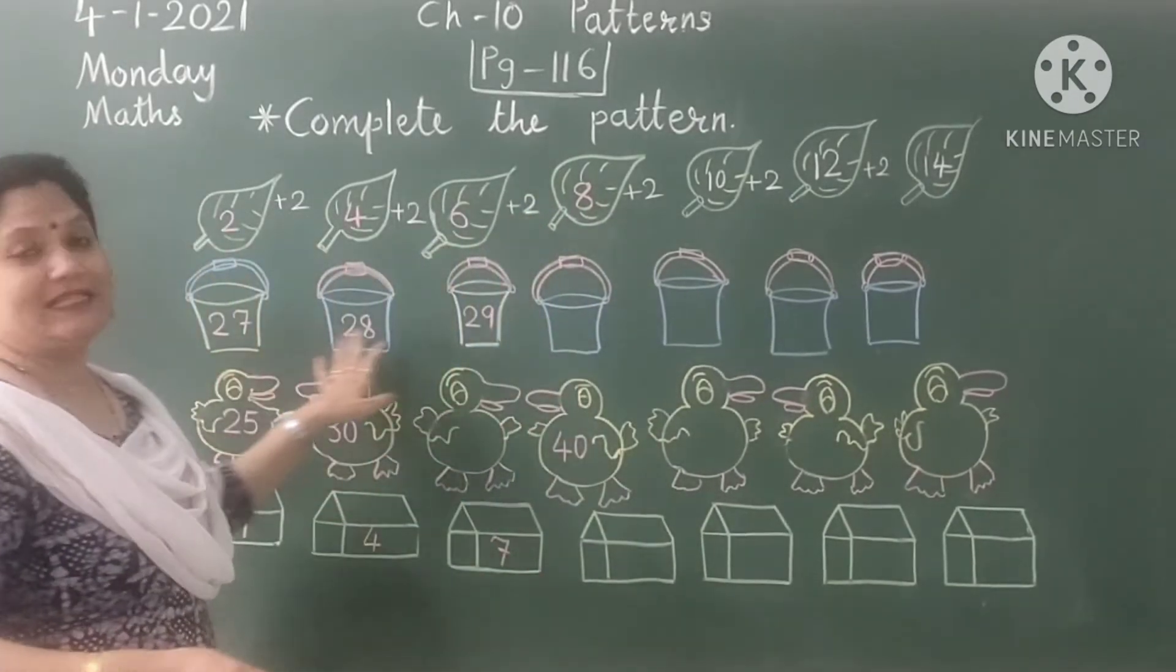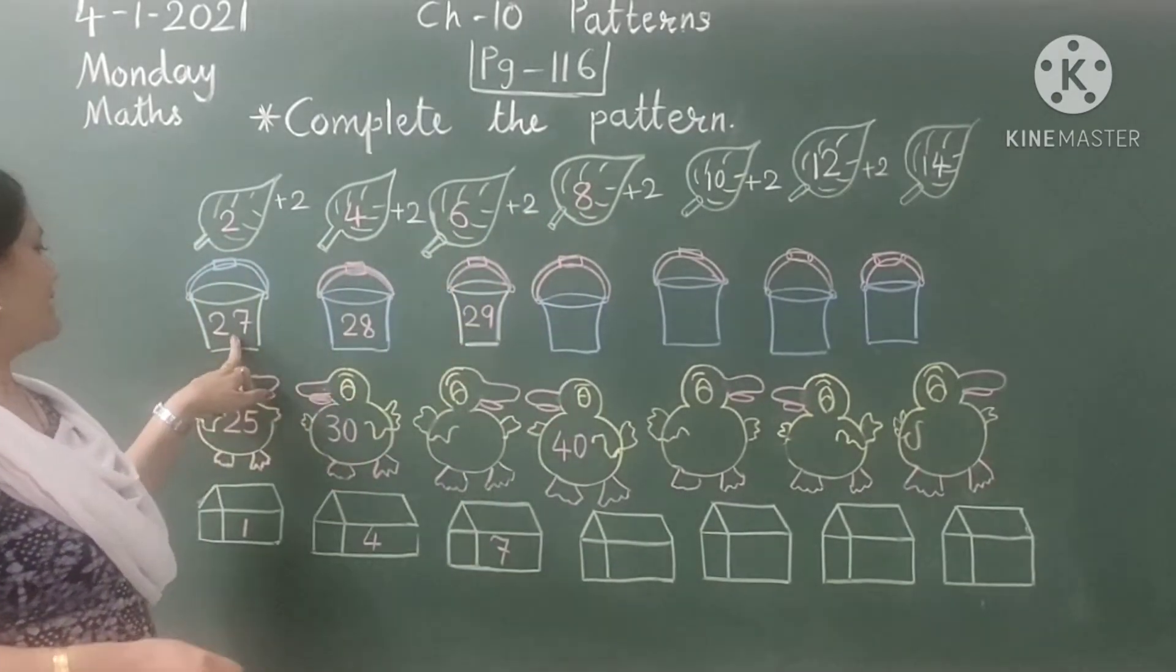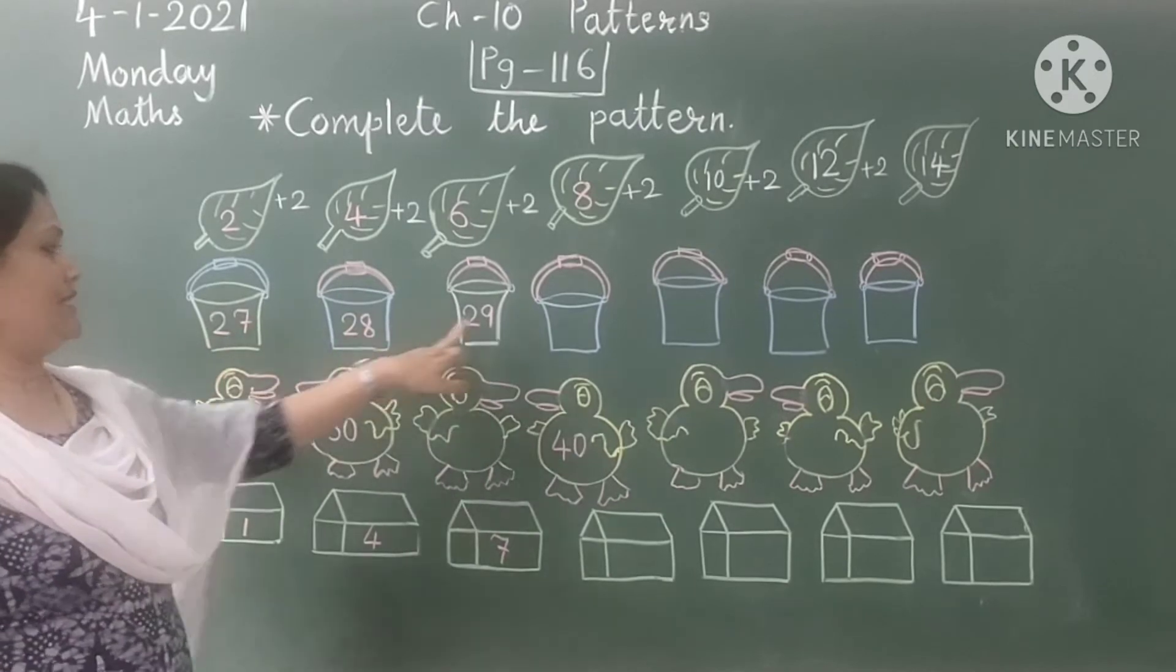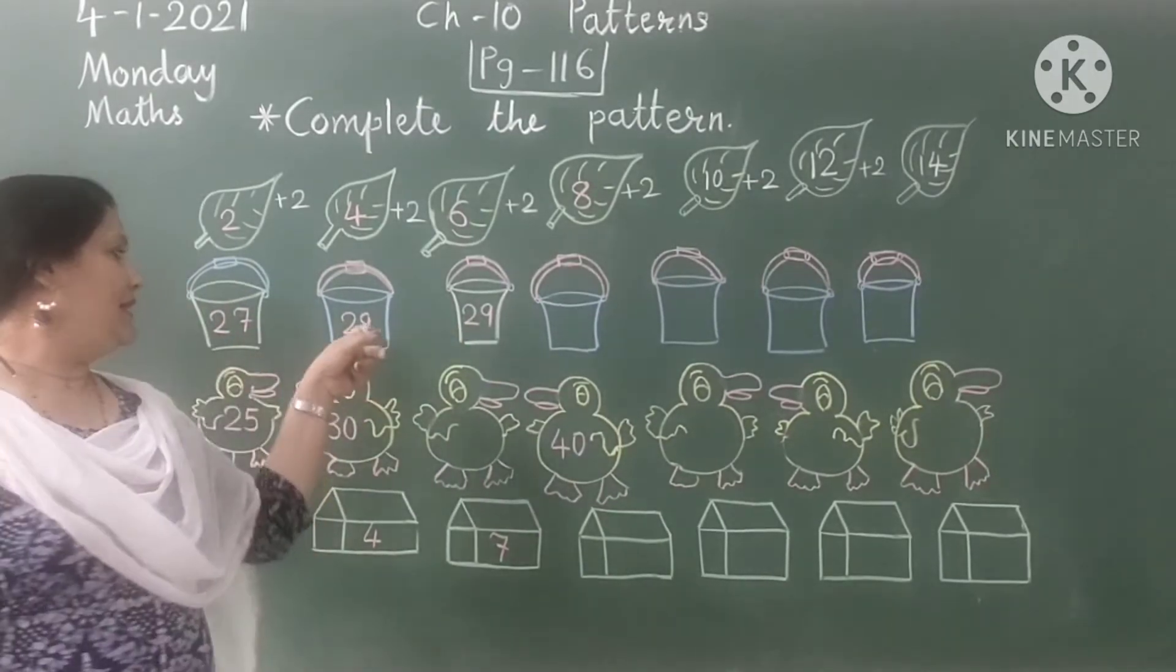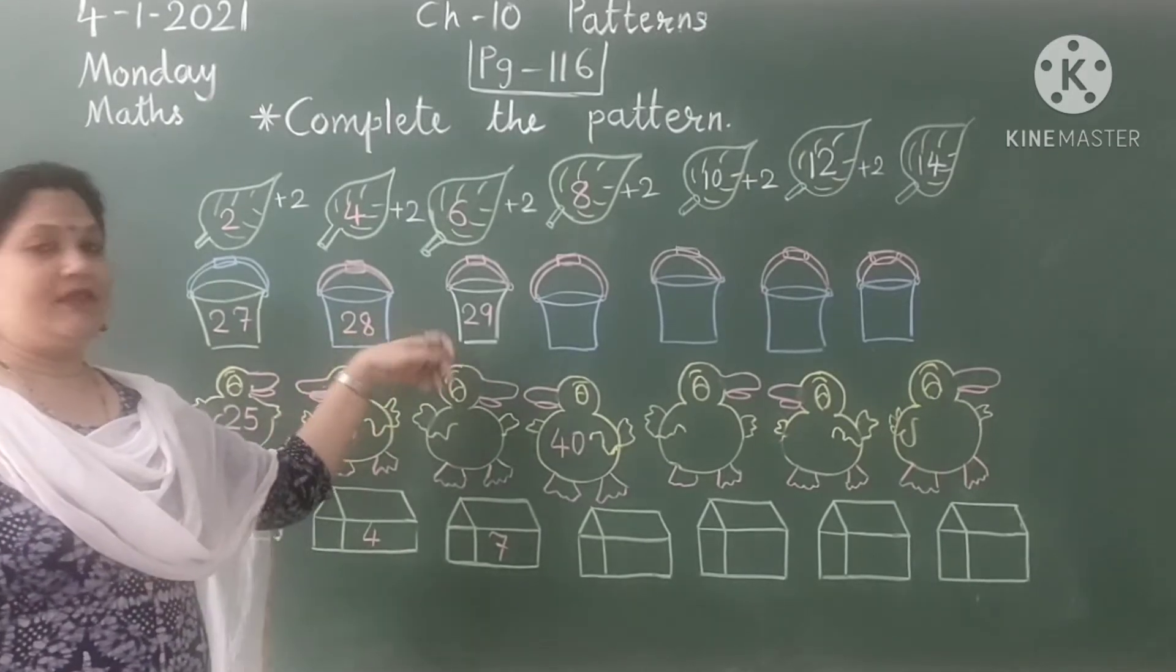Now let's see next one. These are buckets. In bucket, 27, 28, 29. After 27, if we will add 1, it will be 28. Add 1, 29.